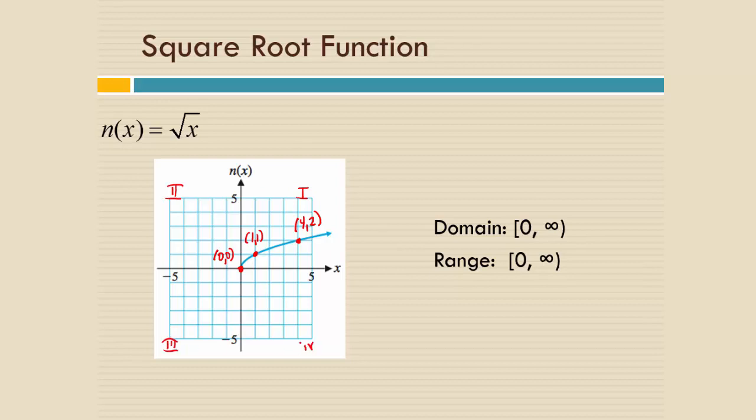1, 2, 3, 4. Quadrant 1 has positive x and y coordinates. You see our domain and range only include positive values and 0.